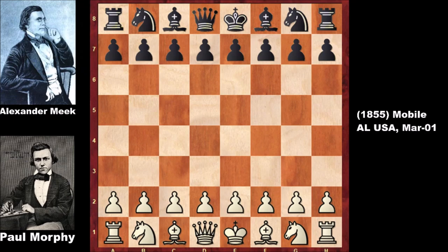Welcome back to another exciting chess game from the history of chess. White is Paul Morphy and his opponent is Alexander B. Ford Mac. Alexander Mac was many things — a lawyer, a judge, a politician, an author, writer, and a poet. But those specialties are not going to help him in a chess game against Paul Morphy, who was one of the greatest chess players in the history of chess.